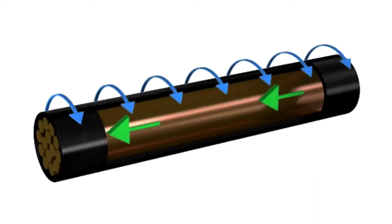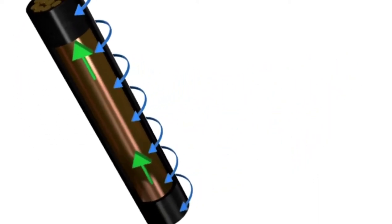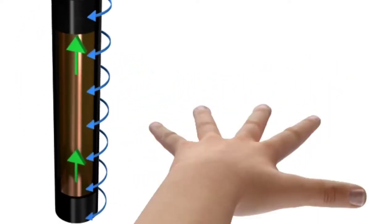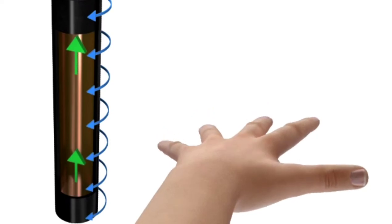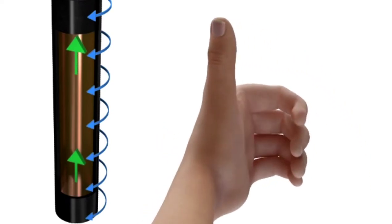The left hand rule states that by pointing your thumb in the direction of the current, your fingers will naturally curl in the direction of the flux of the magnetic field.